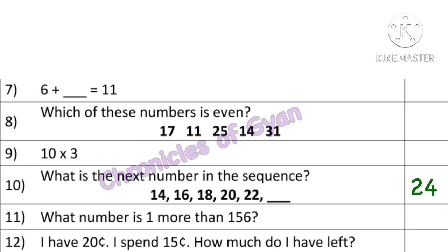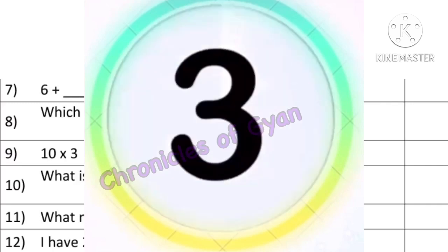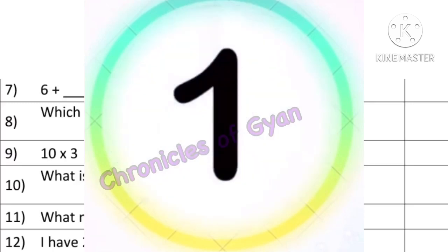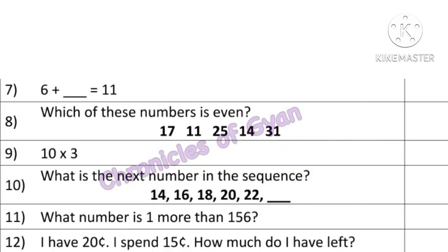Question 11: What number is 1 more than 156? 1 more than 156 means you have to add 1 to 156. Whenever the word 'more' appears, you do addition. Whenever 'less' appears, you do subtraction. So 156 plus 1, we get 157.